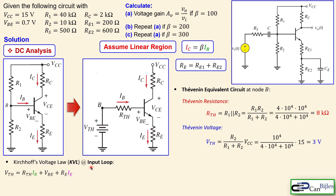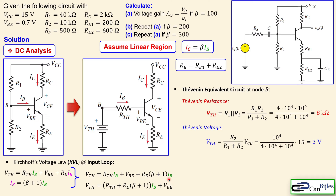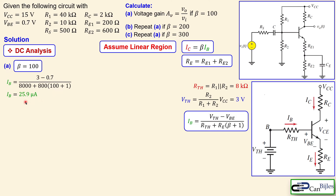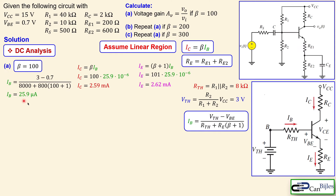The Thevenin resistance is the parallel combination of the two resistors, giving 8 kilo-ohms, and the Thevenin voltage from the voltage divider at node B from VCC gives 3 volts. Applying Kirchhoff's voltage law in the base loop: V_Thevenin equals the voltage across R_Thevenin plus VBE plus the voltage across RE. The emitter current is beta plus one times IB. Substituting and collecting coefficients of IB gives a useful expression for IB in terms of the other parameters.